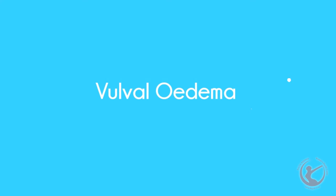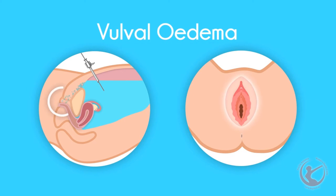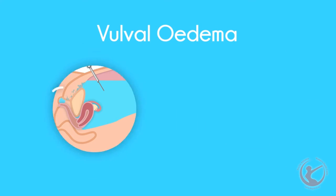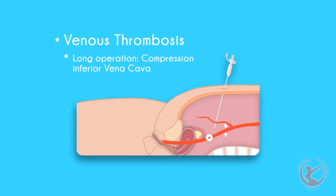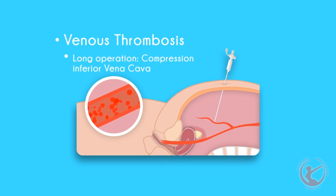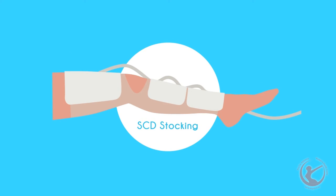Vulval edema. This occurs especially in patients in whom adhesion barrier solutions have been used, with drainage into the vulval area being the cause. Edema may also occur in other areas in the abdomen, dependent on the position in which you are lying, when the fluid gravitates towards those areas. Venous thrombosis. Prolonged operation time and the restricting effect of the intraperitoneal pressure on venous return may lead to venous embolism. We therefore use SCD stockings, which pump blood in your calves throughout the procedure.